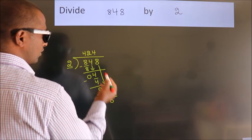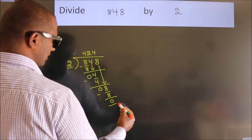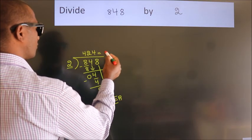After this, no more numbers to bring down, so we stop here. This is our remainder, this is our quotient.